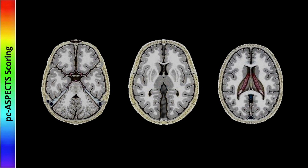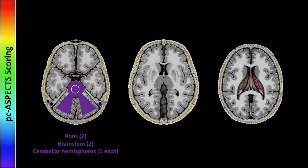Let's move to posterior circulation ASPECTS scoring. The pons counts as 2, the brainstem counts as 2, and each of the cerebellar hemispheres counts 1 each for a total of 2. So in the posterior fossa we have 6 of the points — this is used to assess basilar artery occlusions. Next, we have the thalami, which count 1 each, and the occipital lobes, also 1 each, giving a total of 10 points. These are accrued and scored in just the same fashion as a regular ASPECTS score.